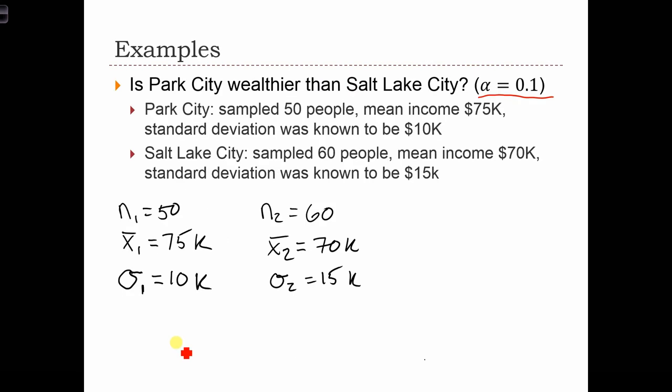Let's calculate that over here. We've got the square root of σ1² over n1 plus σ2² over n2. Let me just pull up my calculator. So on the top there, we've got 10,000 squared.